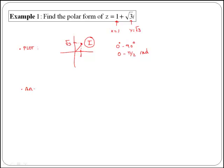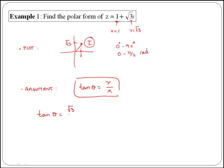To get the argument, remember that tan of theta is equal to y over x, which in our case means that tan of theta is equal to the square root of 3 over 1, which means that tan of theta is equal to the square root of 3.